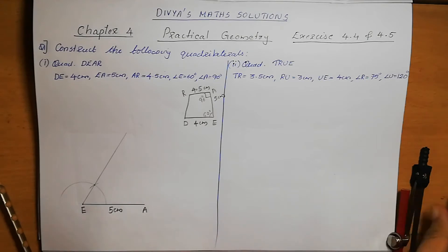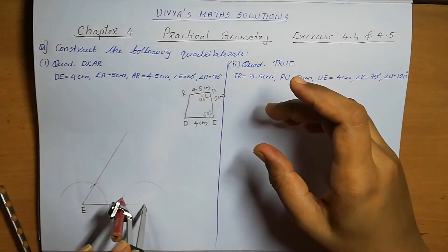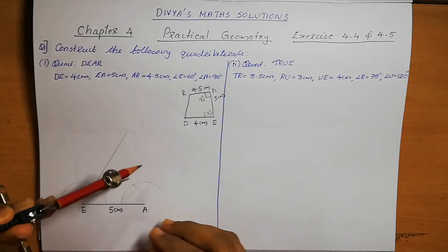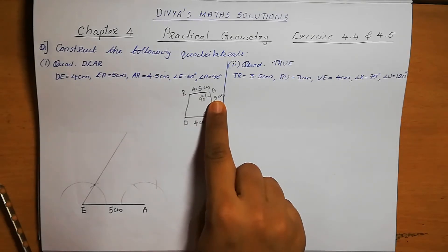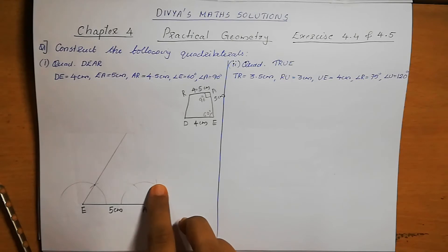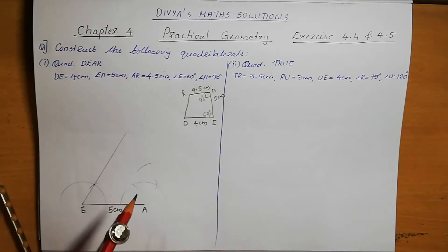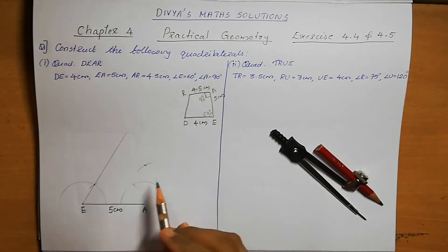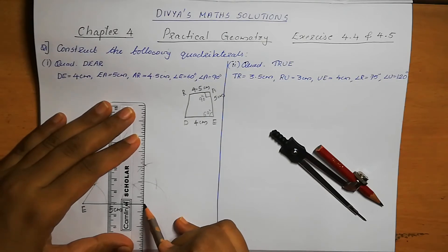Angle A is 90 degrees, so we mark 90 degrees at angle A. Draw an arc; where it touches line EA, from there cut the first arc. From where it touches, draw the second arc. The first arc gives 60, the second gives 120. We need 90, which is 60 plus 30. So 30 will come in the middle. We find the midpoint of the 60-degree arc — that gives 30 — and 60 plus 30 is 90 degrees. Mark this as 90 degrees.